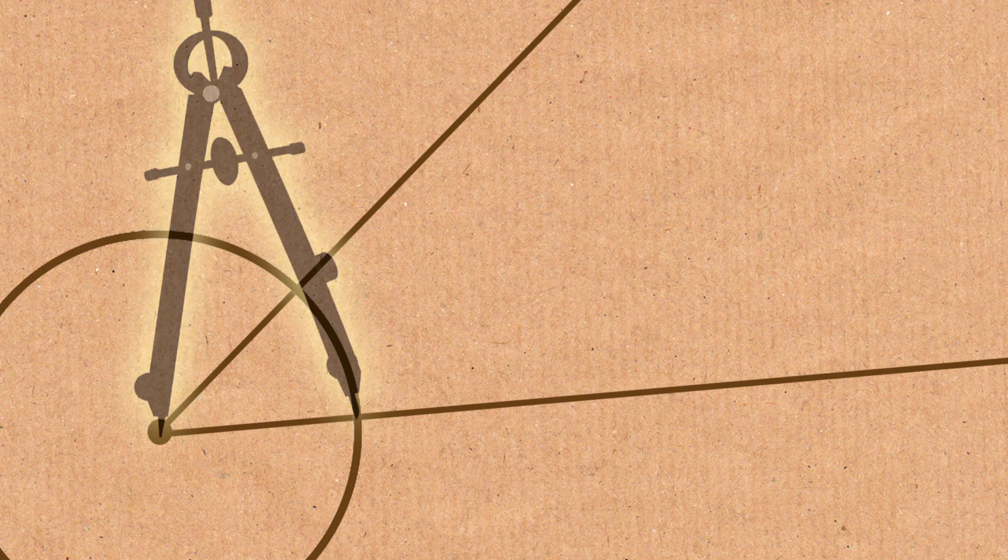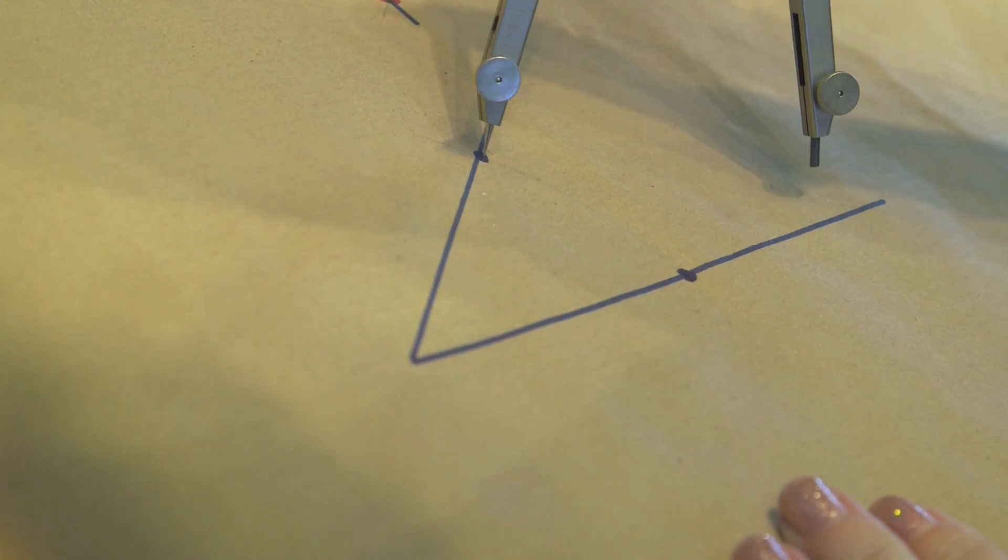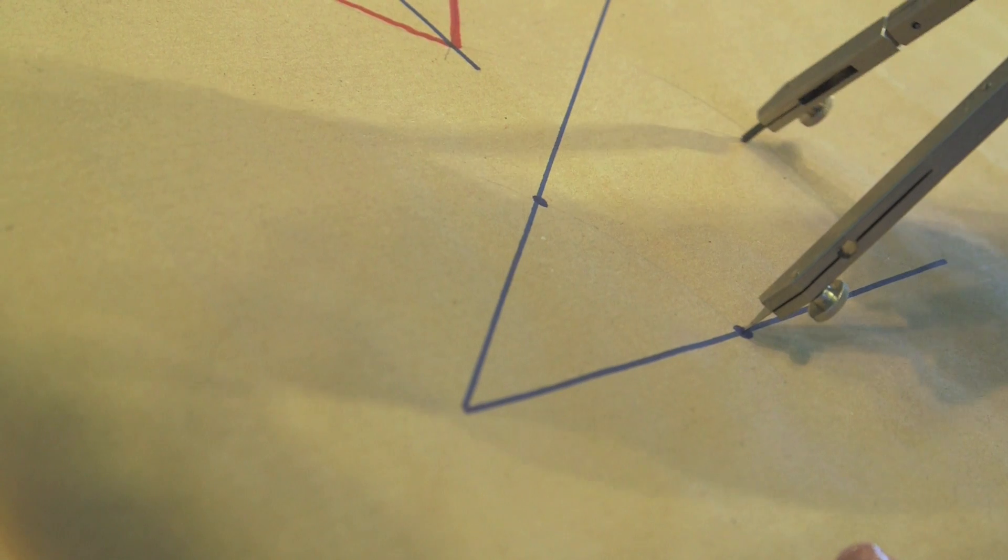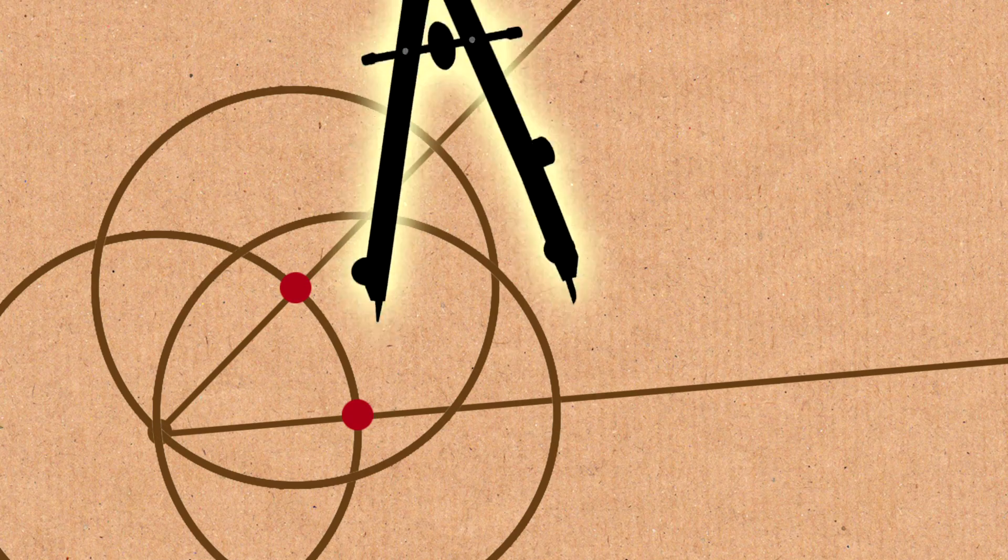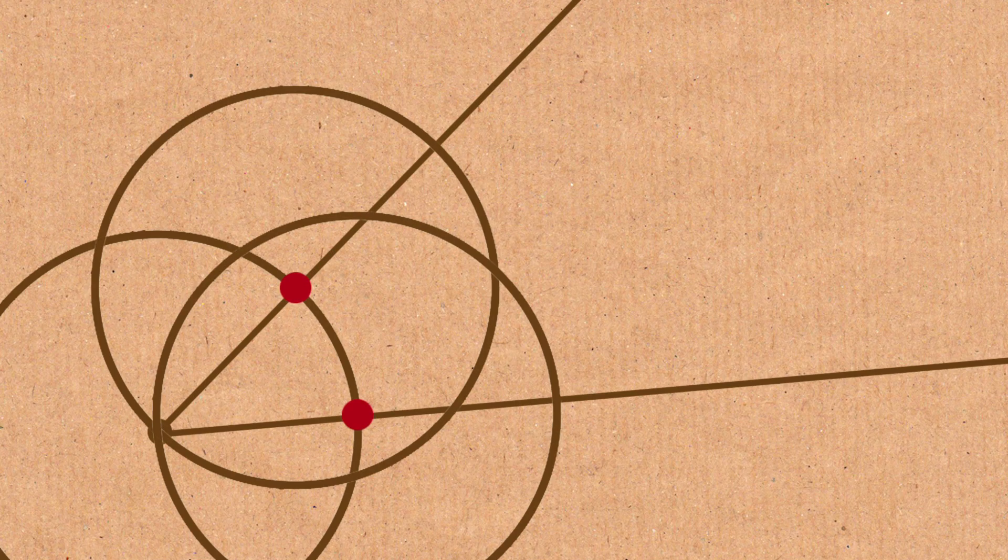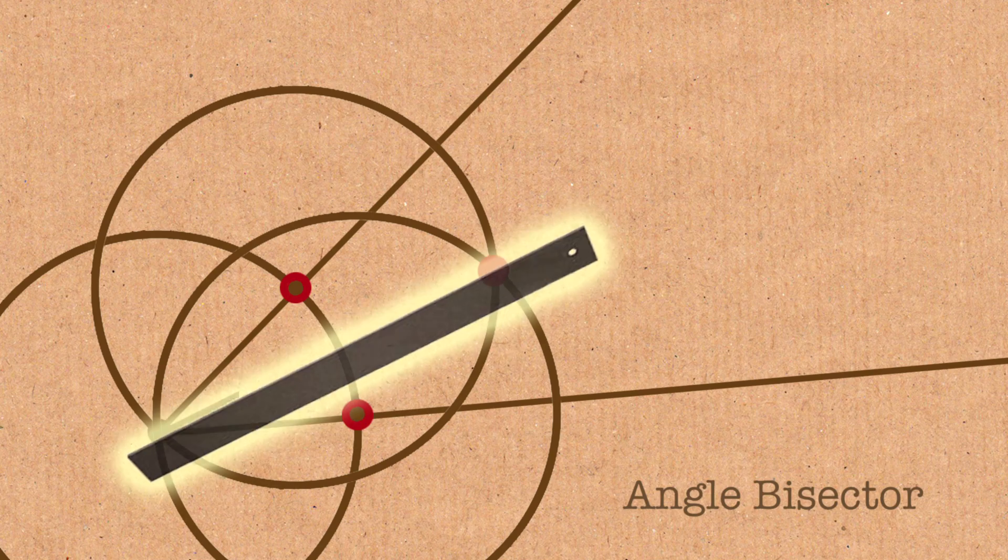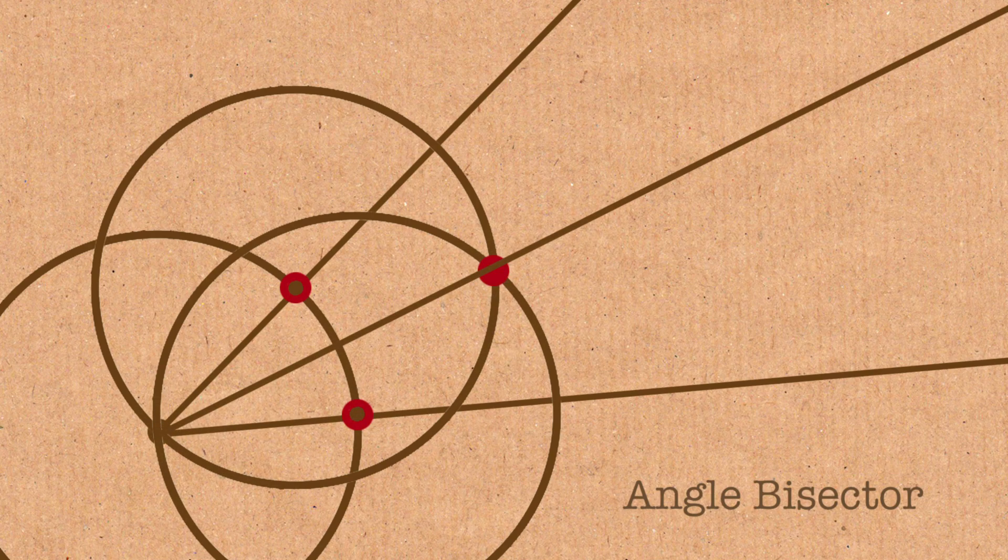And then from where the circle arc intersects those two lines, we draw another two circle arcs. And these two have to be with the same radius as each other. And then where those two intersect, we draw a line. And that line will bisect the angle.